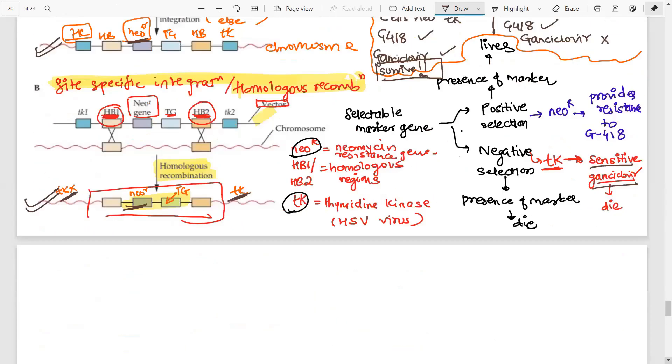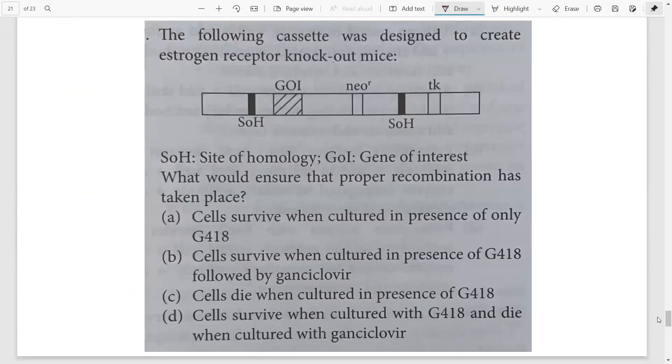So let us solve some questions so you can apply what you have understood. Now what are they saying in this particular question? They have shown you a cassette which is designed to create an estrogen receptor knockout mouse. So they want to knock out the estrogen receptor. So this must be the knockout cassette. They have added the gene of interest that they want to knock out, and along with that is a neomycin resistance gene.